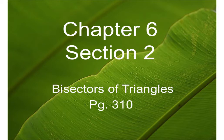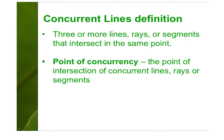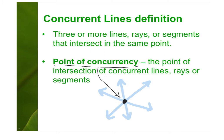Today we are diving into section 2 of chapter 6, called 'Bisectors of Triangles.' There are two main vocabulary words in this lesson: circumcenter and incenter. We're going to go over what each of those are — they have different properties. Concurrent lines definition: three or more lines, rays, or segments that intersect in the same point. Point of concurrency: the point of intersection of concurrent lines, rays, or segments.